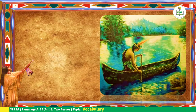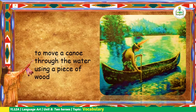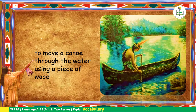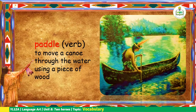Look at this picture. To move a canoe through the water using a piece of wood — so this is a type of action word. So what is the other word of row? Like row, row, row your boat. So that is what you call paddle. Paddle is a verb. The girl paddled her boat or canoe.